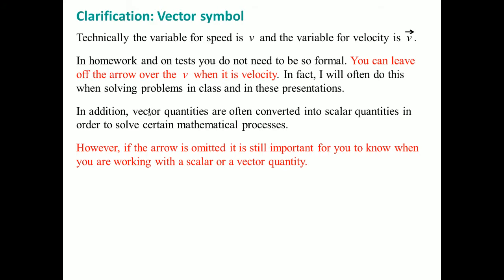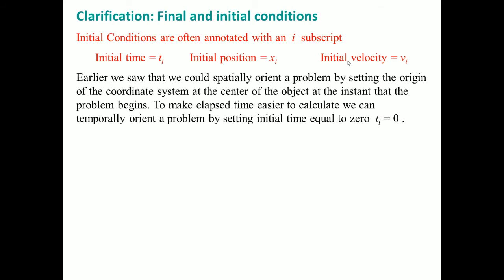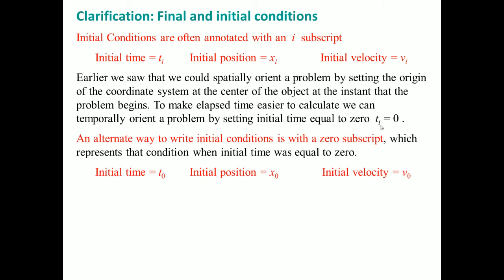If we do that, I want you to still be aware that even if the arrow is omitted, it is very important for you to still know whether it is a scalar or a vector quantity. So let's look at your final and initial conditions. Sometimes you can see it with a subscript i, like in this case. An alternate way to see that is with the subscript zero — so T₀, X₀, or V₀.